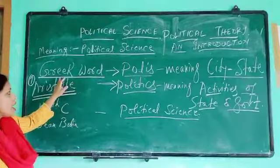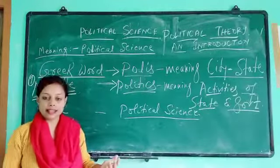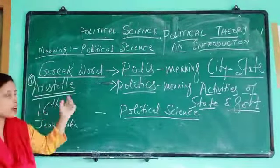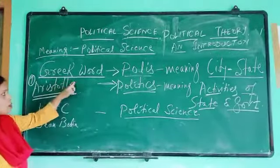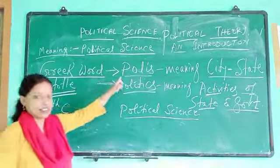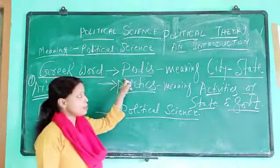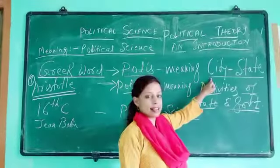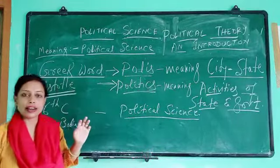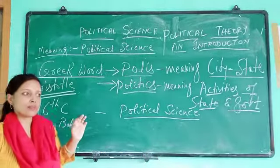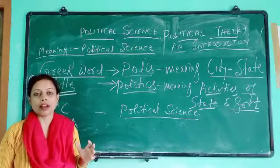First of all, from where did we get the word 'political science'? The word 'political science' originally came from the Greek word 'polis.' The meaning of 'polis' is city-state. In earlier days, states were small in number and population was also small.